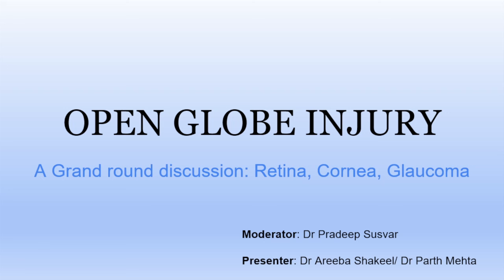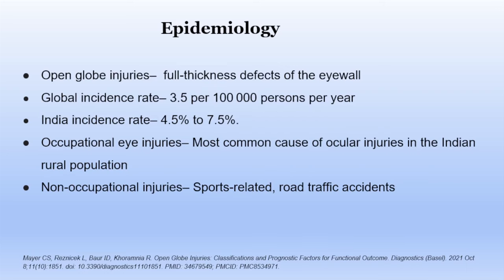Good evening everyone. We'll start this discussion on open globe injury — it's an interdepartmental discussion so I request everyone to participate. Open globe injury is defined as a full thickness defect in the eye wall. The global incidence ranges from 3.5 per 1 lakh persons per year, and in India the incidence is 4.5 to 7.5. The most common cause in the rural population is occupational injury, and non-occupational causes include sports-related injuries or road traffic accidents.